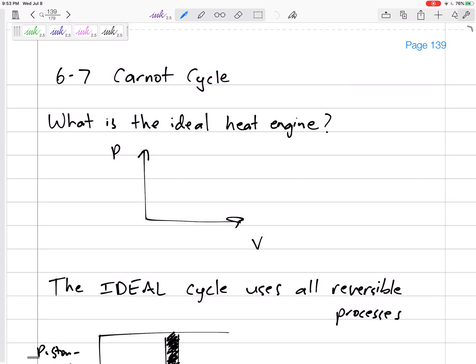So Carnot figured out that using reversible processes is the best way to go. That's ideal, that's our theoretical goal.